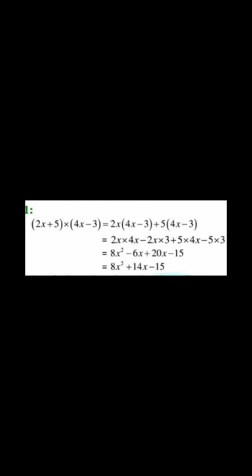First multiply coefficients, 2 into 4 into x into x. That sums up to 4 into 2, 8, and x into x is x square. Bases are same, powers are added. Then minus 6x plus 20x minus 15.